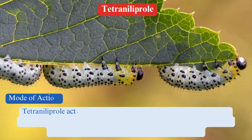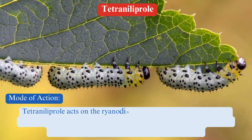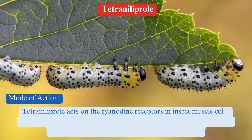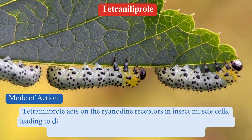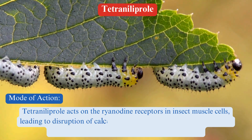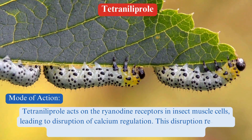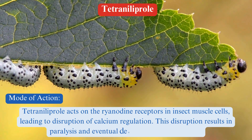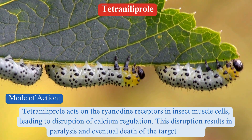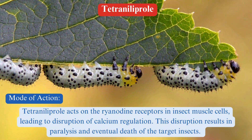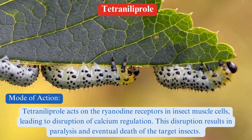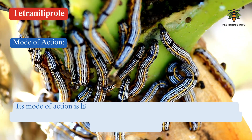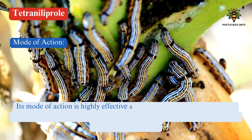Mode of action. Tetraniliprol acts on the ryanodine receptors in insect muscle cells, leading to disruption of calcium regulation. This disruption results in paralysis and eventual death of the target insects. Its mode of action is highly effective against